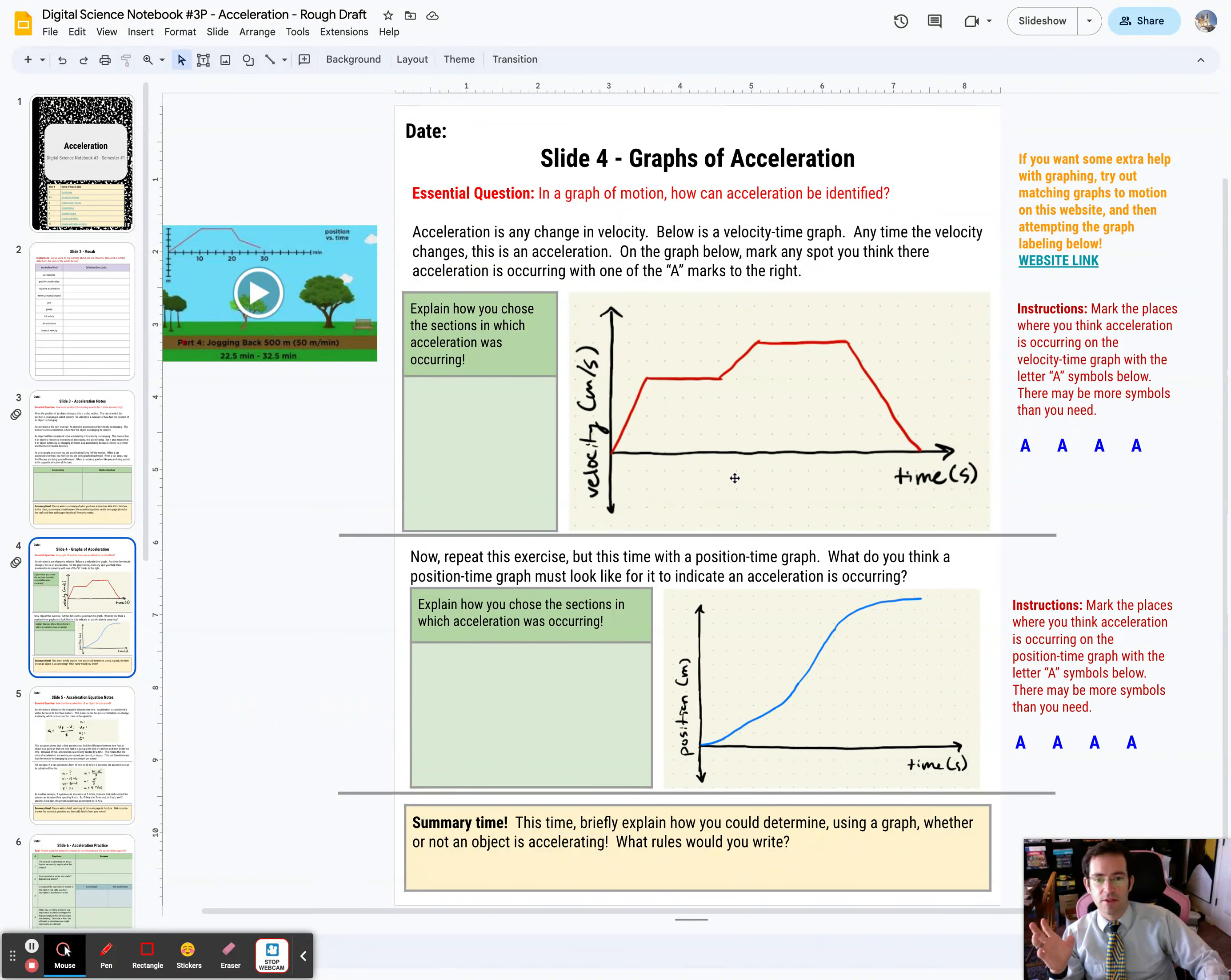So there's going to be two graphs on this page you need to look at. The first one is a velocity-time graph. Remember that acceleration is happening any time the velocity is changing. So you need to identify in this graph anywhere you think velocity is changing using a letter A. You may or may not use all of them.